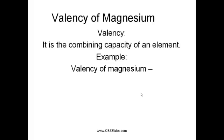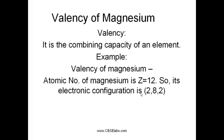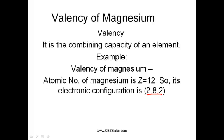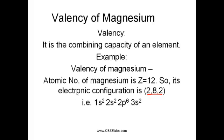Let us start with finding the valency of magnesium. In order to find out the valency of any particular atom, we require the atomic number and its electronic configuration. Here we have the atomic number of magnesium as 12. Its electronic configuration is given by 2, 8, and 2 — that is, 1s2, 2s2, 2p6, and 3s2.